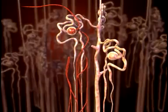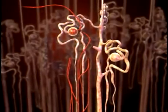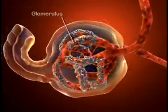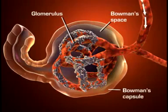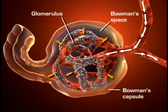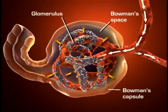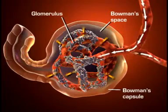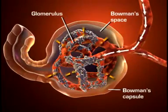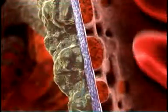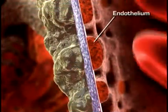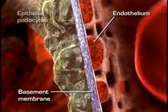Each nephron consists of a glomerulus and a system of tubules. The glomerulus is a unique high-pressure mass of capillaries that filters the blood. The glomerulus is encased in a thin, double-walled capsule called Bowman's capsule. The space inside the capsule and surrounding the glomerulus is called Bowman's space. Plasma-like fluid is filtered from the capillary blood into Bowman's space through the glomerular filtration membrane, which consists of three layers of capillary wall: the endothelium, the basement membrane, and the epithelium.